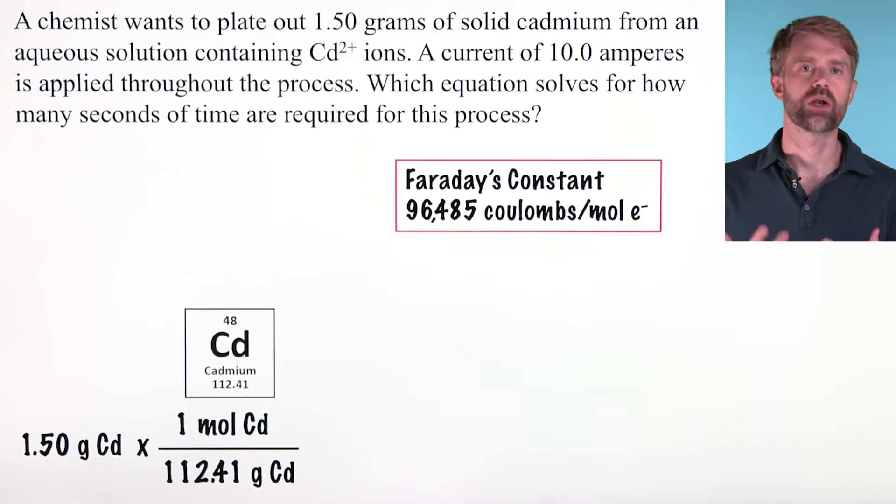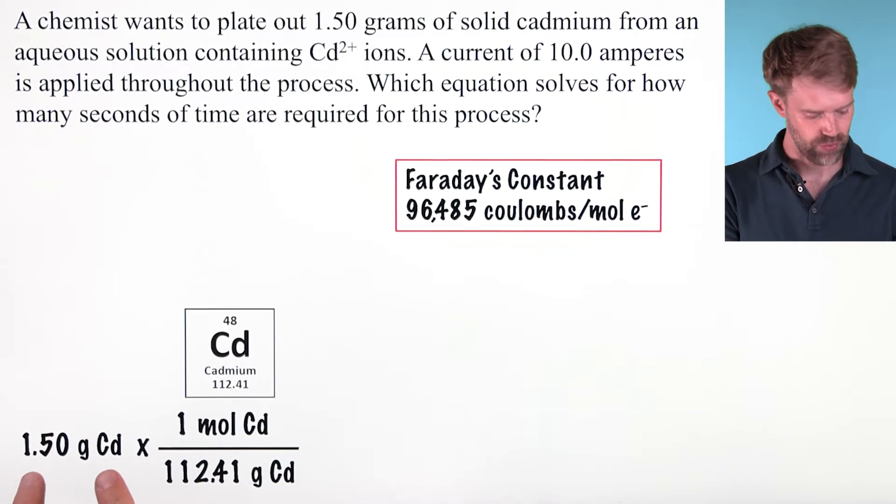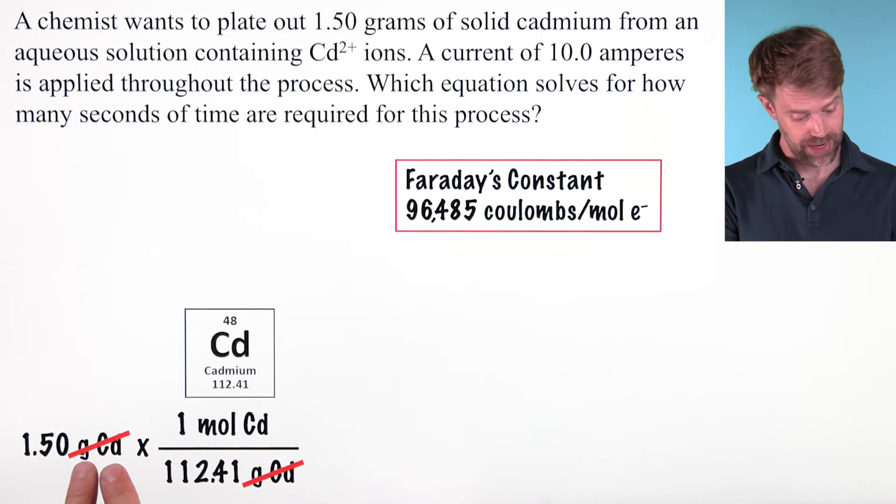The first thing we want to do is convert from grams of cadmium to moles of cadmium. We're going to do that by using the molar mass of cadmium. We can get that right from the periodic table and arrange that as a conversion factor so that grams of cadmium cancel.